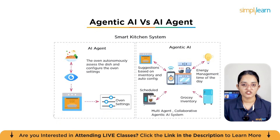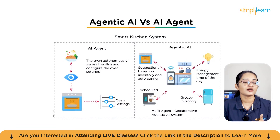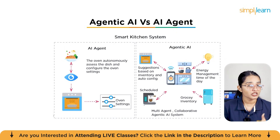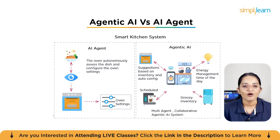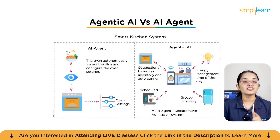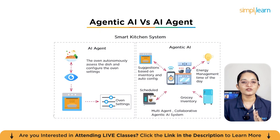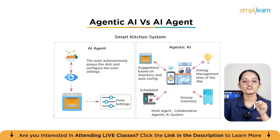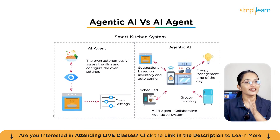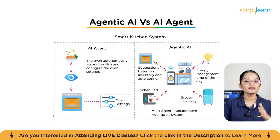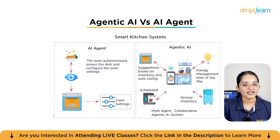On the right side we have agentic AI — think of it as a whole kitchen system working together. Here the oven doesn't just configure itself; it talks to other smart devices, checks your grocery inventory in the fridge, considers the time of day and energy usage, and coordinates with your coffee machine or other appliances through a smart kitchen hub. It can even suggest recipes based on what you have at home and automatically configure your devices to match. So the difference is simple: an AI agent is a specialist great at one specific job, while agentic AI is like a team manager — it coordinates multiple agents, tools, and systems to achieve a bigger, smarter outcome.